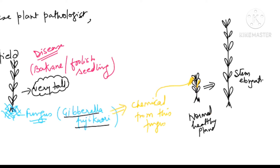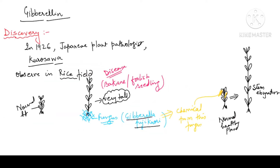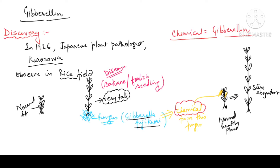This is the way the discovery was done. The chemical they identified is known as Gibberellin, because this chemical was isolated from the fungus Gibberella fujicuroi. So the chemical they isolated is known as Gibberellic acid.